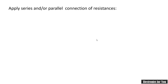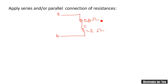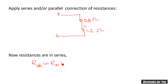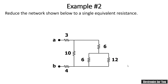Drawing the reduced circuit, we have 0.8 ohm between A and C, and 1.2 ohm between C and B. These two resistances are connected one after the other, meaning they are in series. Therefore, R_AB equals R_AC plus R_CB. The first and last points A and B remain; C is eliminated. So R_AB equals 0.8 plus 1.2 ohm, which equals 2 ohm. The equivalent resistance is 2 ohm.